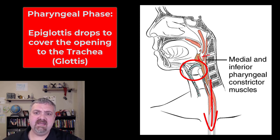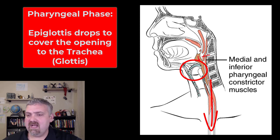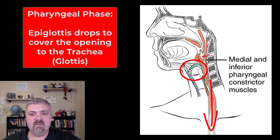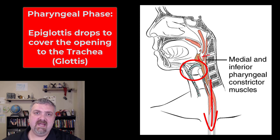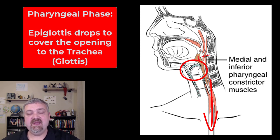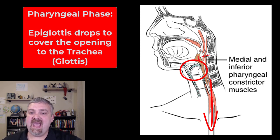All this is being controlled by the deglutition centers in the medulla oblongata. There is one more interesting thing here: when you swallow, there is something called deglutition apnea. For a brief period of time while you're swallowing, you will stop breathing. Swallowing generally takes maybe a second for a liquid, four to eight seconds for solids. But there's a period in there where you are not breathing — that's called deglutition apnea.